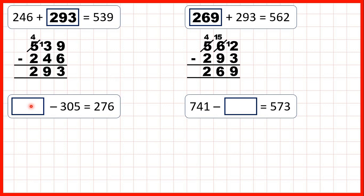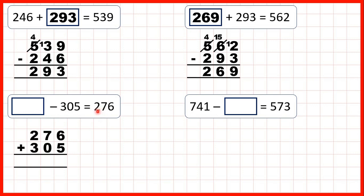Now we have a missing number subtraction: something minus 305 equals 276. Here it's the first number of our subtraction that's missing. We can remember that subtraction problems can be read backwards as addition problems. So to find our missing number, we can work out 276 plus 305. 6 plus 5 is 11, so 1 carry 1. 1 plus 7 plus 0 is 8. And 2 plus 3 is 5. So we get 581.